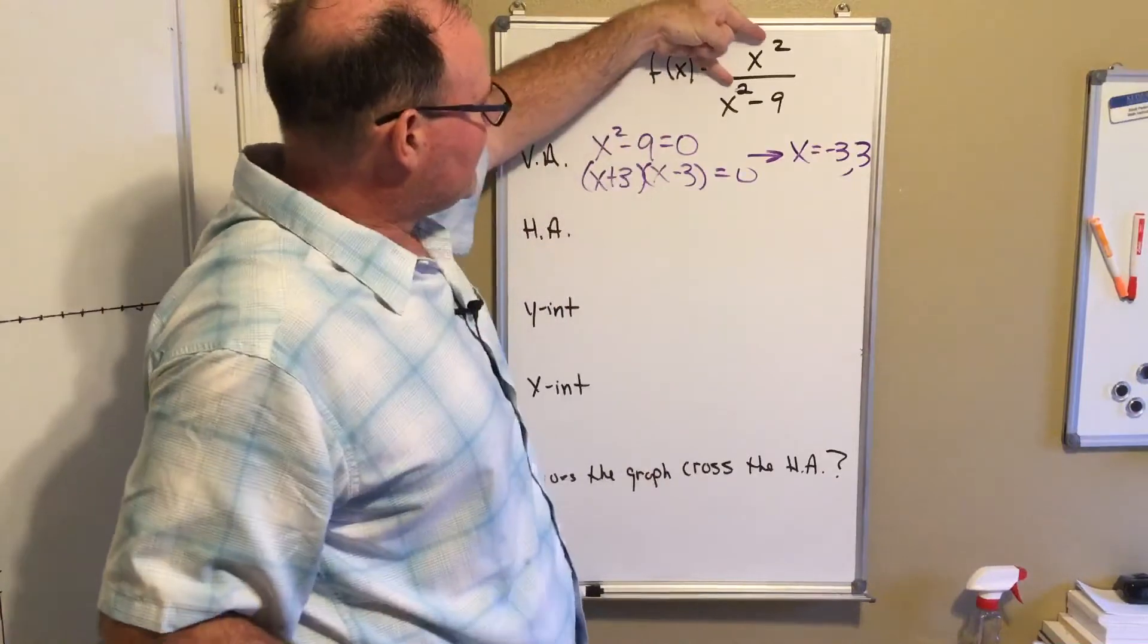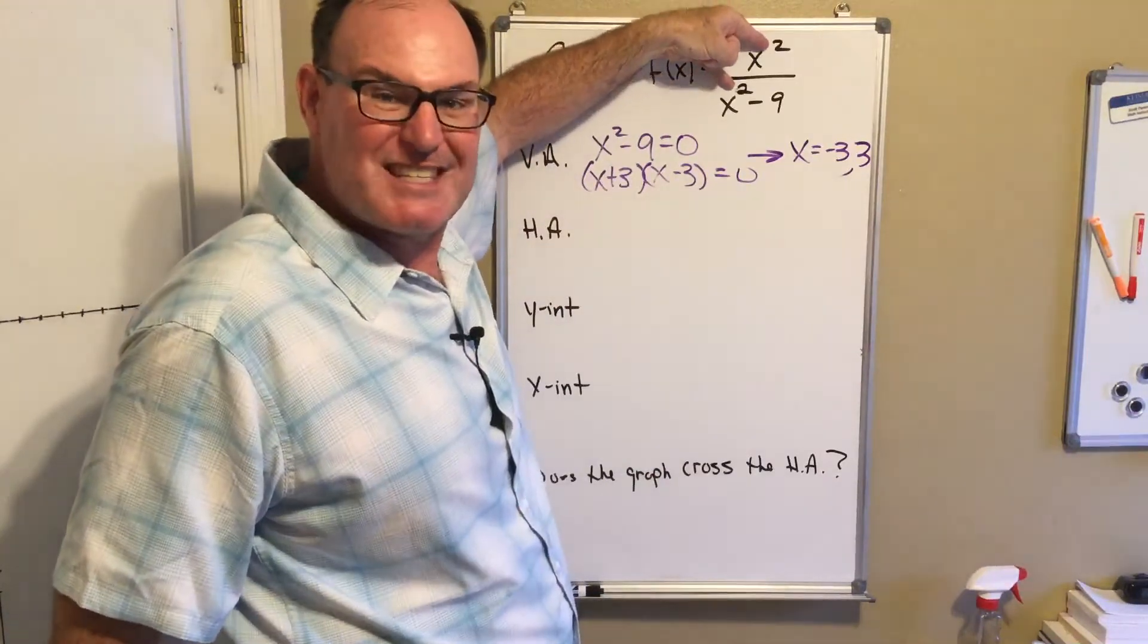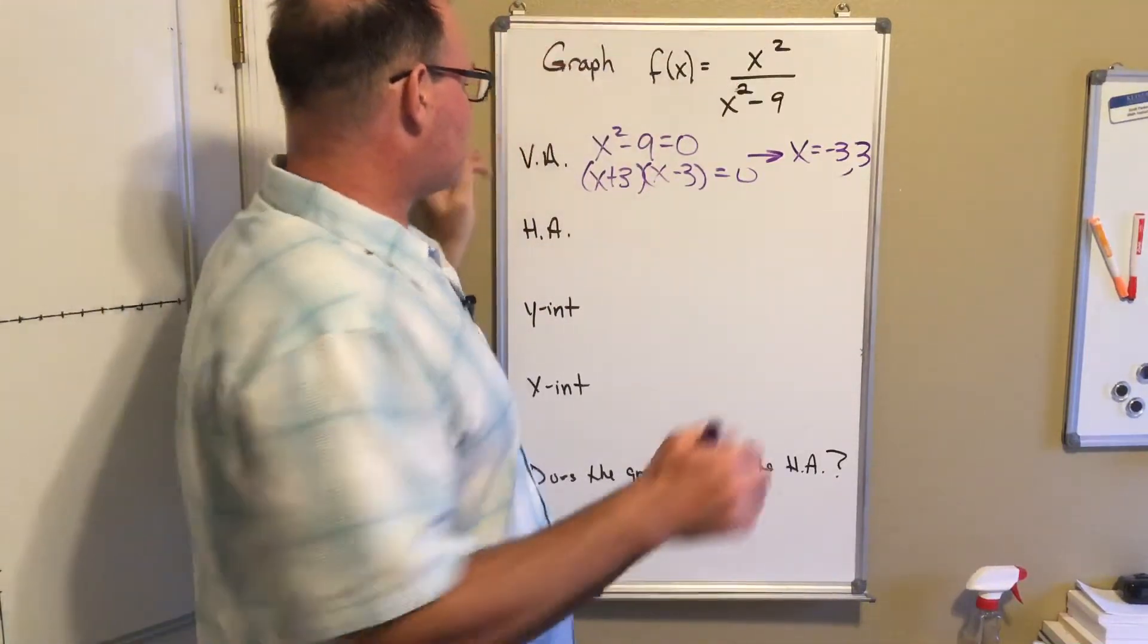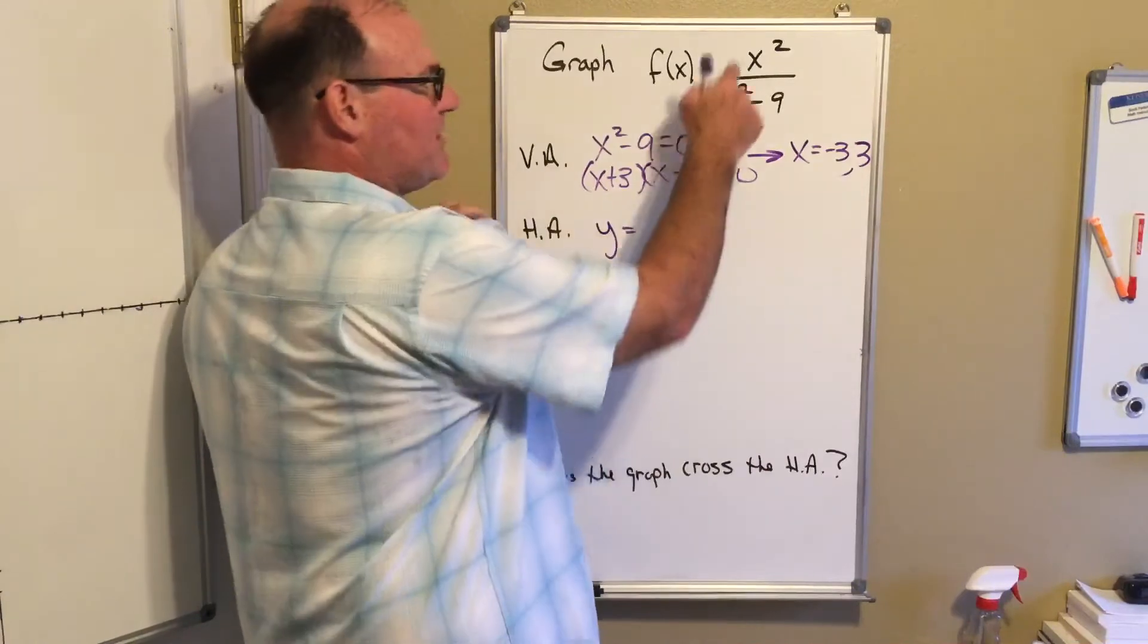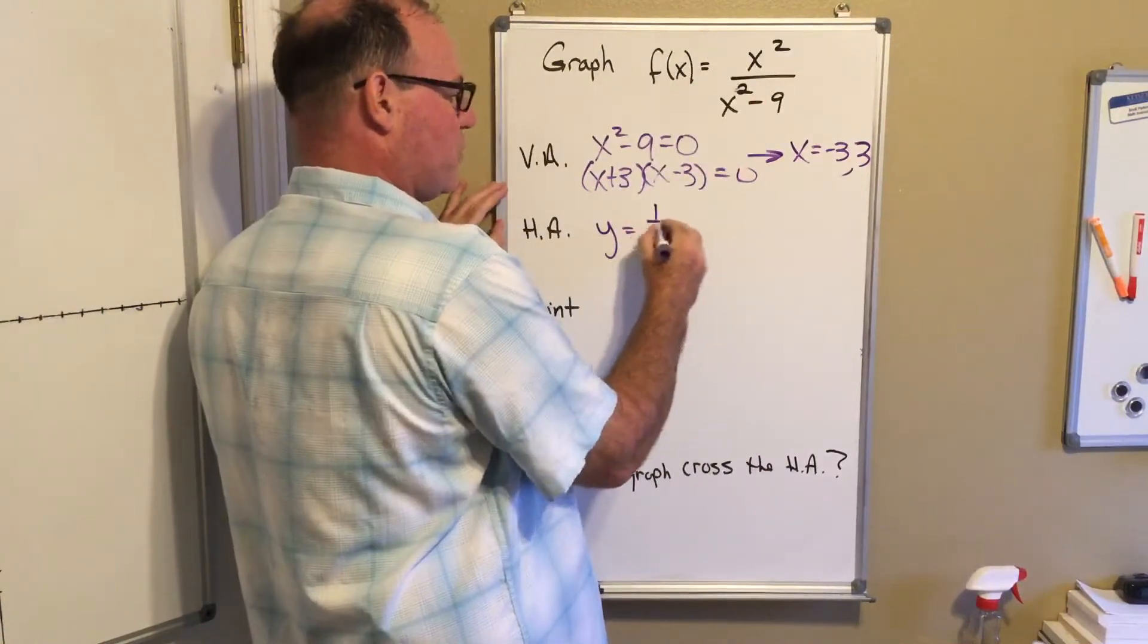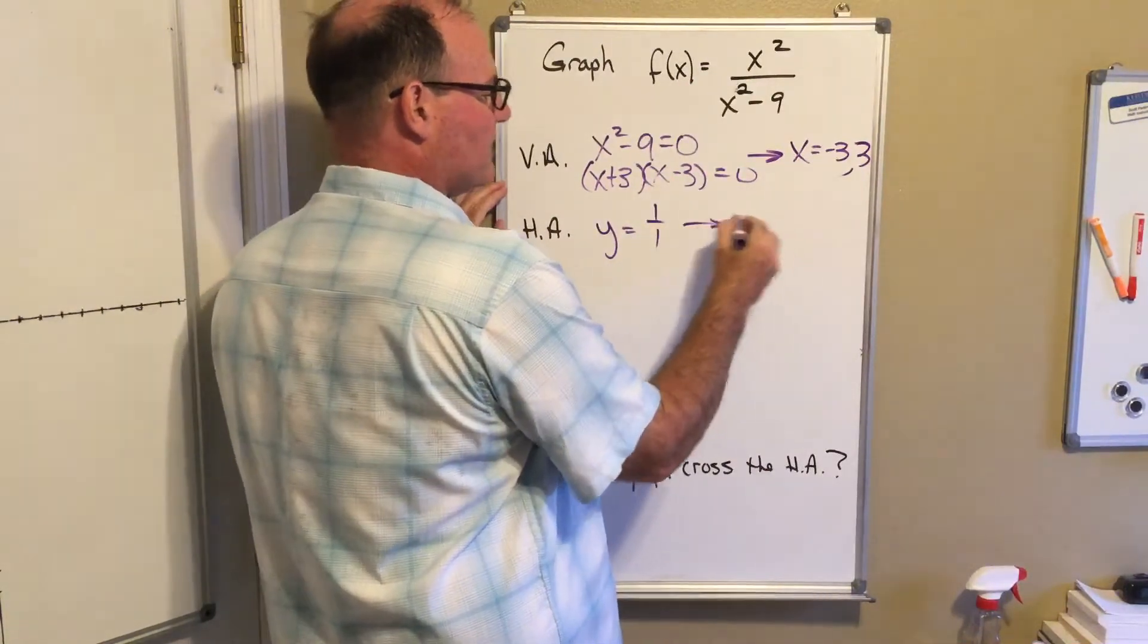My horizontal asymptote - this is the situation where the degrees are the same in the top and the bottom, so the horizontal asymptote is going to be the ratio of their coefficients, which is one over one. So the horizontal asymptote is y equals one.